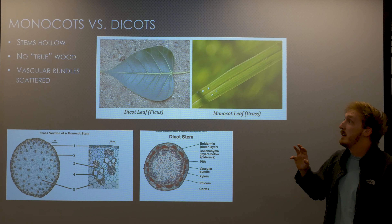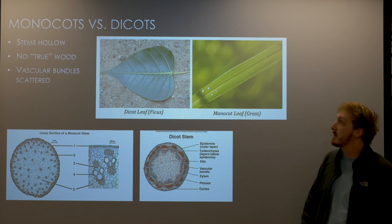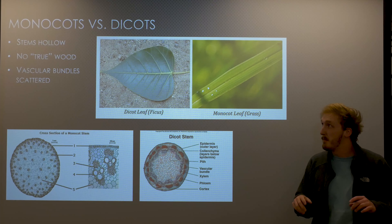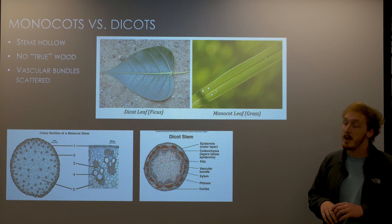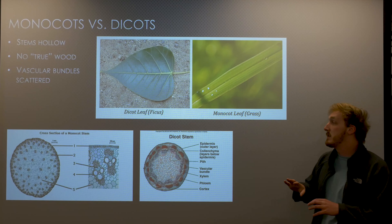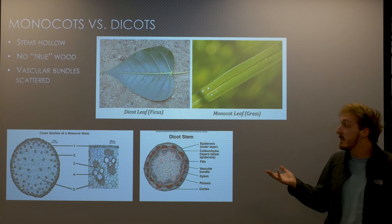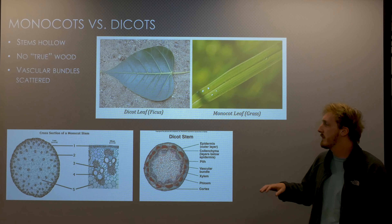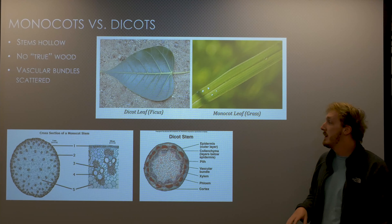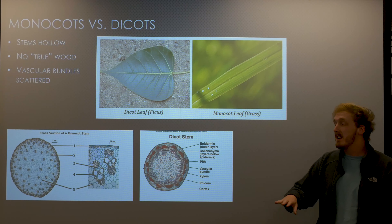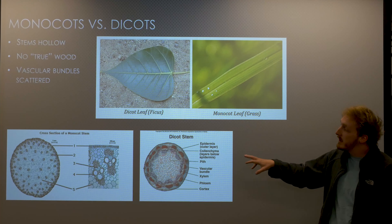Those baby leaves are surrounded by a seed coat, and it's a little bit different for monocots and dicots. In this picture we can see the endosperm — that sugar that's going to support the embryo as it develops — and we can also see that we have two cotyledons in the dicot and one cotyledon in the monocot. Here's a picture of kind of developing ones next to each other, just so you can see that difference of one to two.